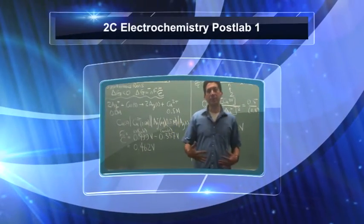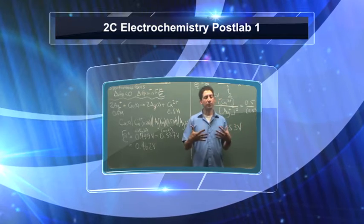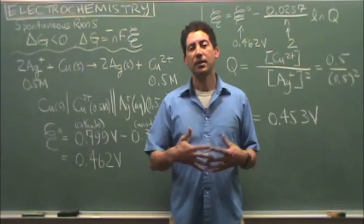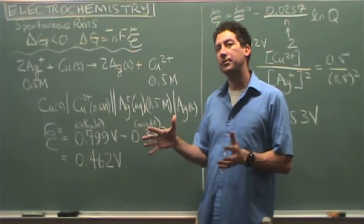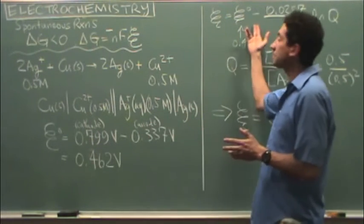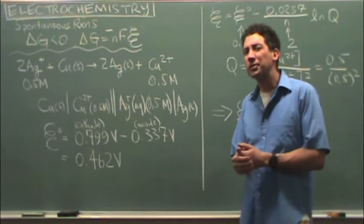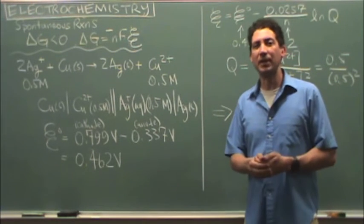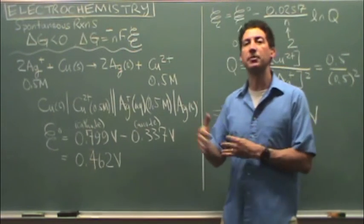Today I want to go through the electrochemistry post-lab calculations. Before I go through some specifics, I want to go through a general calculation and overview of electrochemistry. You're going to be using the Nernst equation really in every part. So every part feels pretty similar until you get to the very last part. So I'll go through this overview and then I'll tell you what to do in each part.